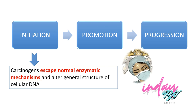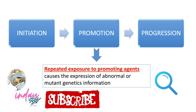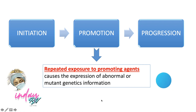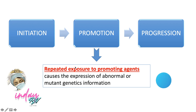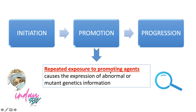The second stage is promotion. From the word promotion, it means promoting. There is a repeated exposure to promoting agents that causes the expression of abnormal or mutant genetic information. In this stage, the mutated cells are exposed to promoters that enhance their growth. There is a certain factor that promotes their exposure in order for the cells to become more abnormal.